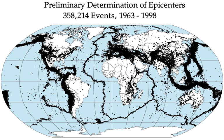Most of the world's earthquakes—90%—and 81% of the largest take place in the 40,000 km long horseshoe-shaped zone called the Circumpacific Seismic Belt, known as the Pacific Ring of Fire, which bounds the Pacific Plate. Massive earthquakes tend to occur along other plate boundaries too, such as along the Himalayan mountains. In areas of high seismic risk, some seismologists warn that a single quake may claim the lives of up to 3 million people.